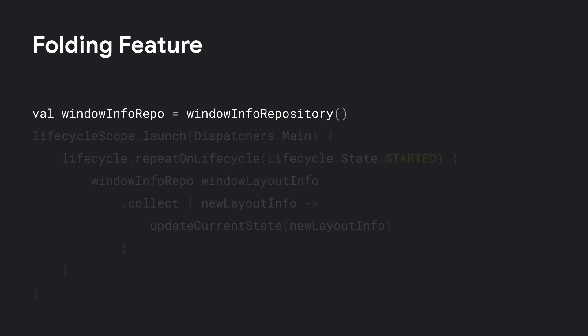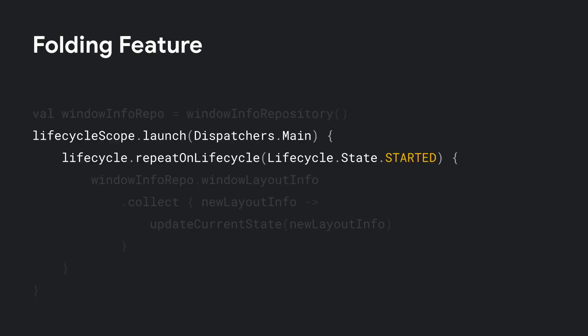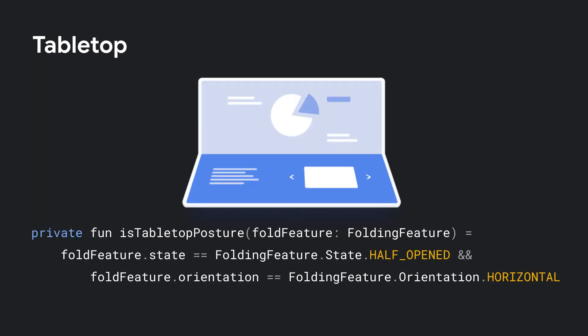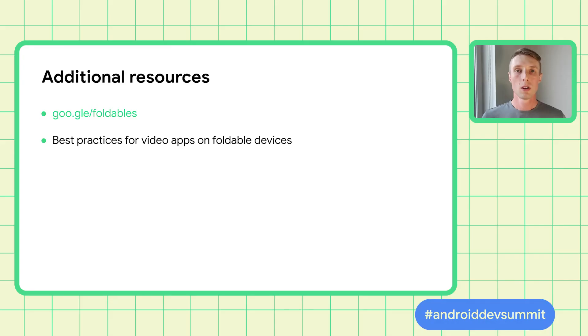The information about feature layout is provided via WindowInfoRepository. To start and stop event collection, we can use a lifecycle scope tracking while the activity is visible. You can then use the information available in the WindowLayoutInfo object to update your layout. FoldingFeature includes information like hinge orientation and state, and we can use these values to check if the device is in tabletop mode — half-open with the hinge horizontal. Check the complete guide on building for foldable devices in our documentation.